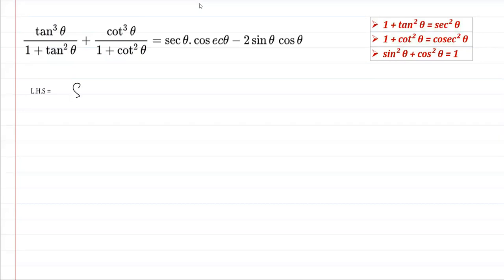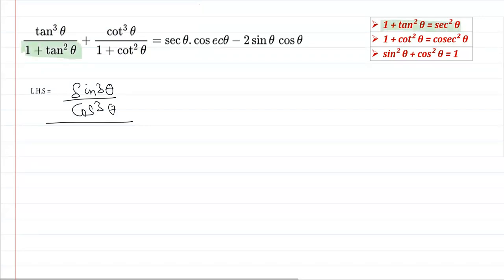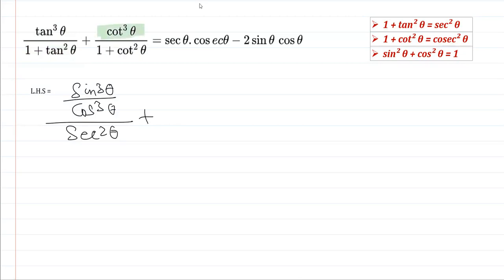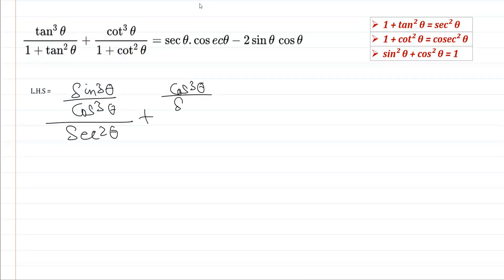So first, tan³θ is written as sin³θ over cos³θ. For the denominator, 1 + tan²θ can be written as sec²θ. Then cot³θ is written as cos³θ over sin³θ, since cot is cos over sin.